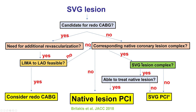However, in those who have a complex vein graft lesion, especially one with recurrent failures as in this patient, then we try to treat the native lesion, even though in many cases these lesions can be very complex with significant calcification.